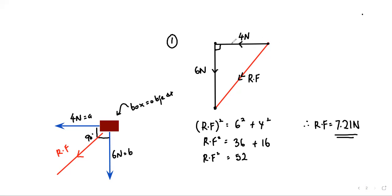Using the Pythagorean method: resultant force² = 6² + 4². Solving this, we get a resultant force of 7.21 newtons. This is how we solve for the resultant force.